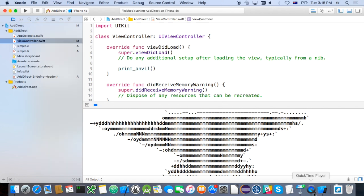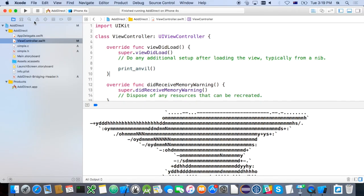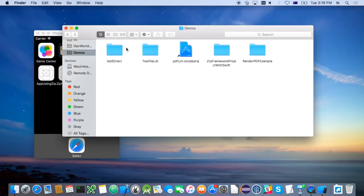To recap: I just added some C code directly to the project — it was really easy. All I had to do was add an import, call the function, we're done. So if you've got just small snippets of C code you want to use, this is probably the best way. However, if you have large amounts of code or code from multiple sources, they might conflict with each other. If you create Swift wrappers, you might find they are tightly coupled to your project — there's no real separation; it's all part of your app when you do it this way. So with those caveats in mind, let's have a look at a more sophisticated way of including C inside your Xcode project.